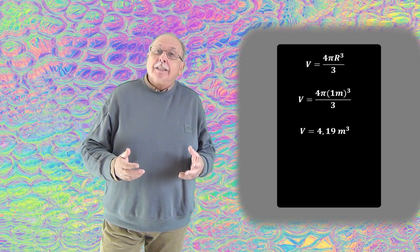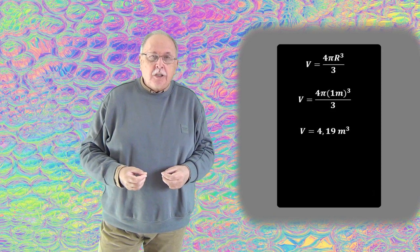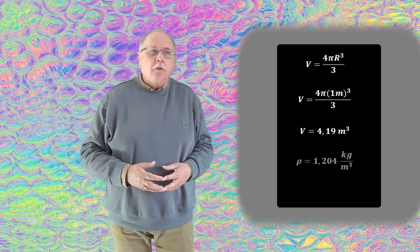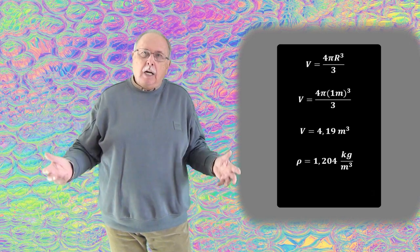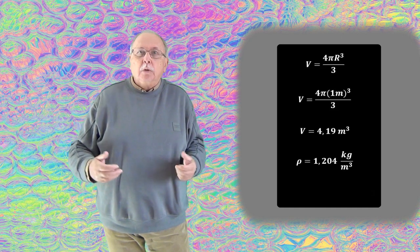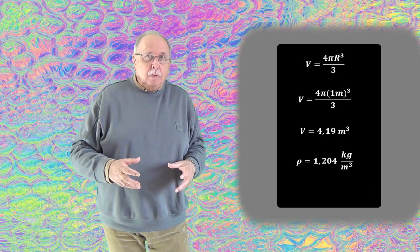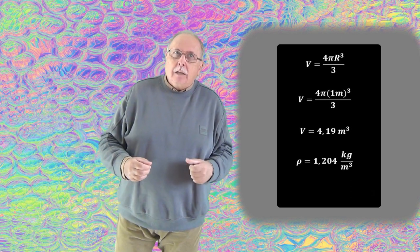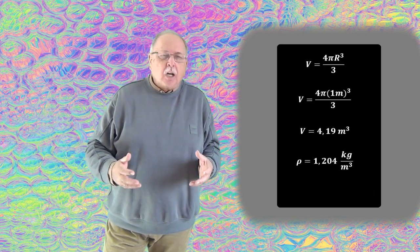Să vedem acum cât cântărește aerul dezlocuit de această sferă. La presiune atmosferică normală și temperatura de 20 de grade, densitatea aerului este de 1,204 kg/m³. Deci fiecare metru cub de aer cântărește un pic mai mult de 1,2 kg. Această densitate depinde de umiditate, scade cu creșterea umidității, dar variația ei la 20°C este de maximum 2%, așa că putem să nu ținem seama de ea.